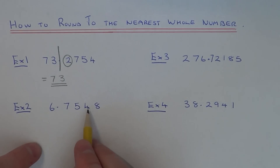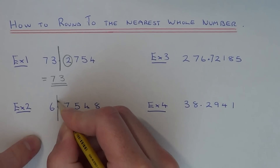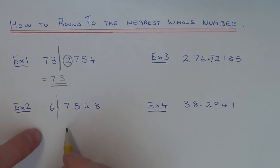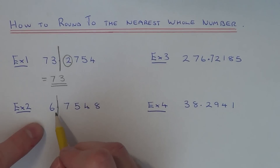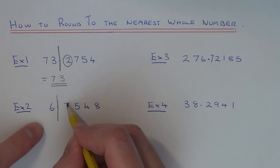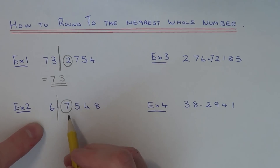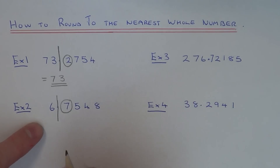So let's move on to example 2: 6.7548. We need to cut the number off here. If we round the number down, our answer will be 6; if we round it up, our answer will be 7. So we've got to decide which number it's closest to. Looking at the number straight away after the decimal point, this is a 7, so this is 5 or above, which means our number is closer to 7.